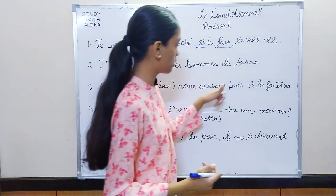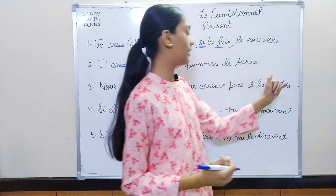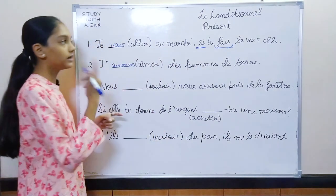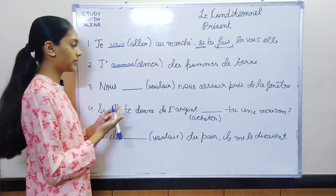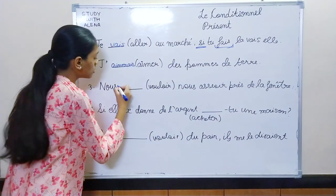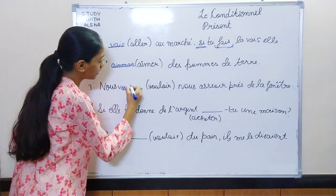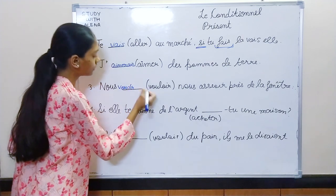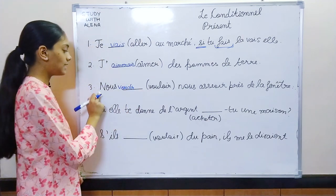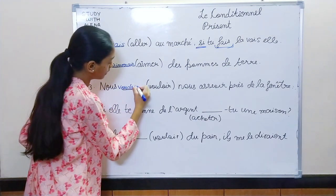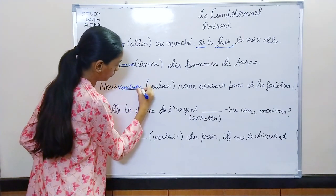Third: nous dash vouloir, asseoir près de la fenêtre — vouloir in conditional present. The future simple radical for vouloir is voudr, plus the ending of imparfait. Answer: nous voudrions.